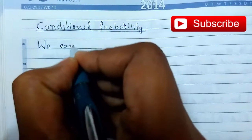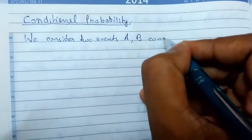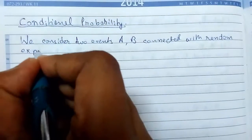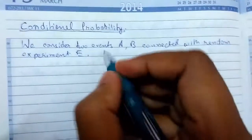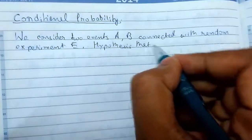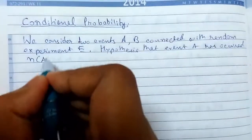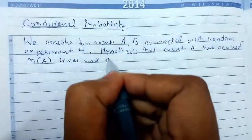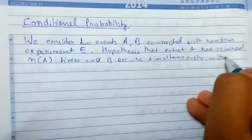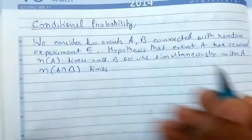We consider two events A and B connected with random experiment E. Now let us make a hypothesis. The hypothesis is that event A has occurred N(A) times and B occurs simultaneously with A, N(A intersection B) times in N repetitions of experiment E.